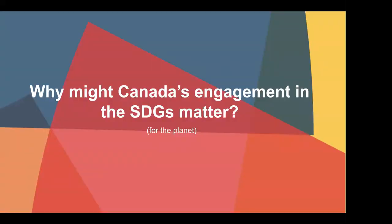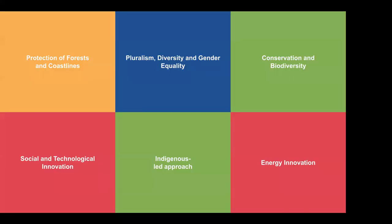Before turning to specific examples, I want to quickly hypothesize on why Canada's engagement in the SDGs might matter globally. One idea that comes up often is simply the scale of natural spaces and coastlines in Canada. If Canada disproportionately protects its coastlines, it actually moves the needle on key targets around coastline protection within the global framework of the SDGs.